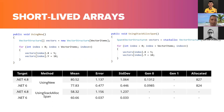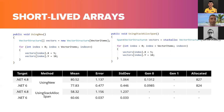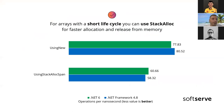Not all performance improvements in the most recent .NET Core versions are faster than .NET Framework, but for allocations the results are quite significant. For arrays with a short life cycle, you can use `stackalloc` for faster allocation and release from memory.